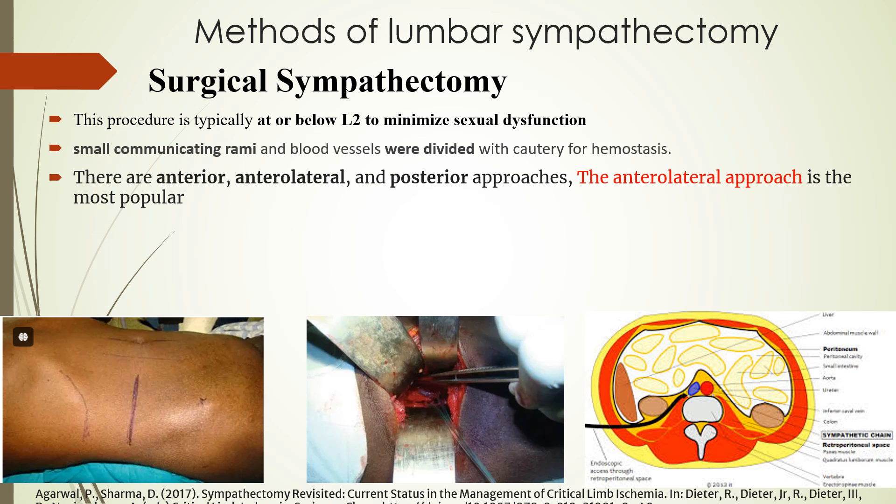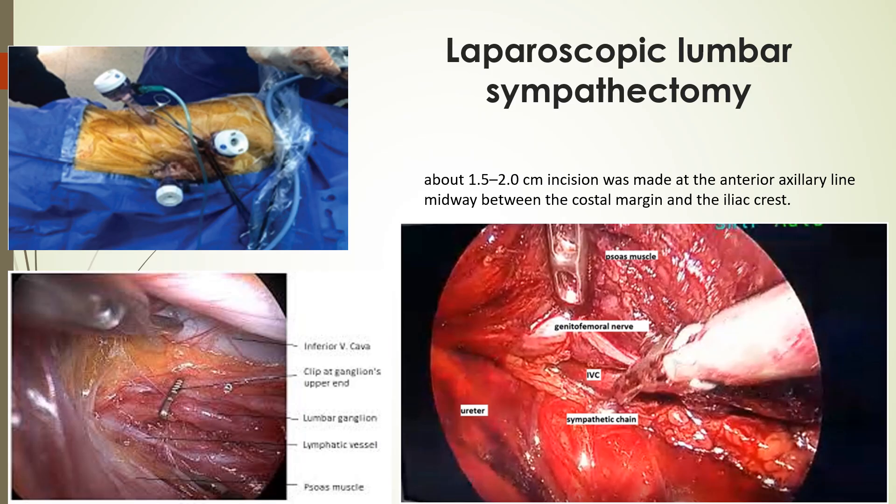For surgical sympathectomy, this procedure is typically performed at or below L2 to minimize sexual dysfunction. Small communicating rami and fibrous tissue should be divided to avoid the risk of recurrence. There are anterior and posterior approaches, with the anterior approach being the most popular. Laparoscopic lumbar sympathectomy using a 2 cm incision along the anterior line between the costal margin and the iliac crest is also an option.